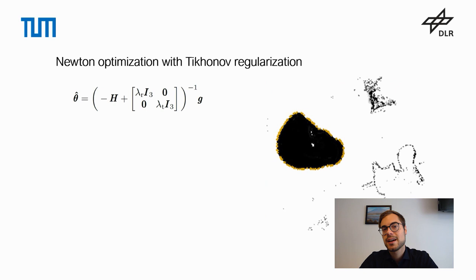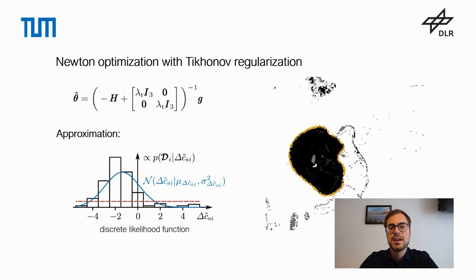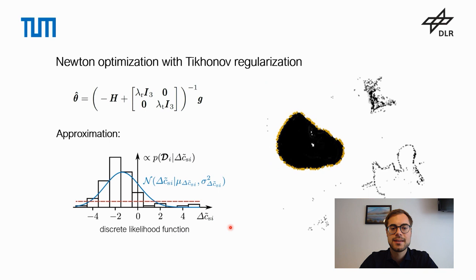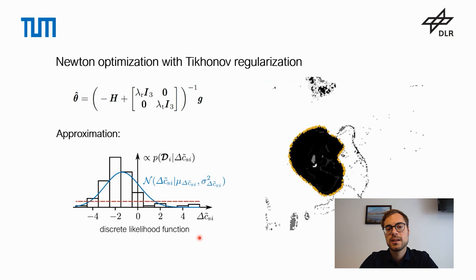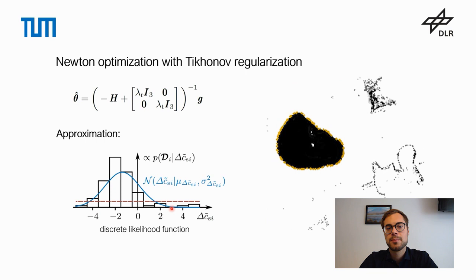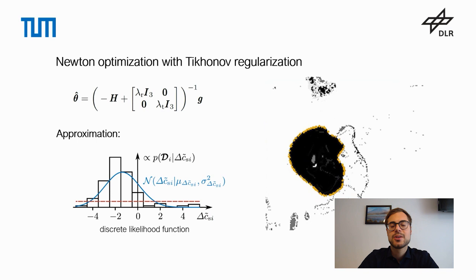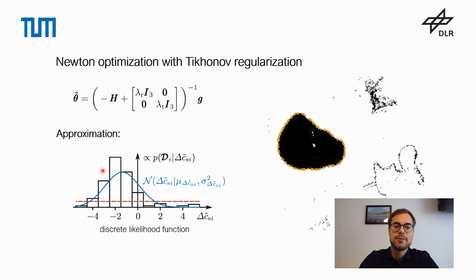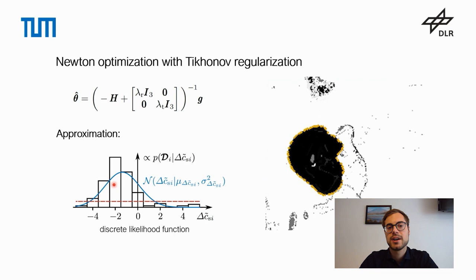To calculate robust first- and second-order derivatives, we use an approximation of our likelihood function. For this, we calculate probability values for multiple projected distances delta c at discrete values. We then use our knowledge that the likelihood function follows a normal distribution and approximate those probability values with a normal distribution. For the calculation of first-order derivatives, we differentiate between two cases. If the two closest probability values are above a certain threshold, those two values are used in the calculation of the first-order derivative.